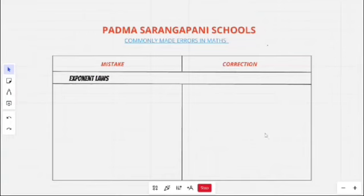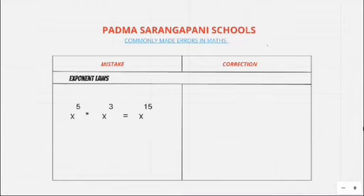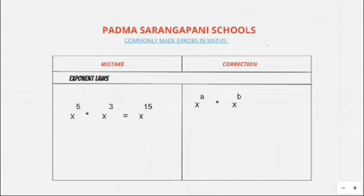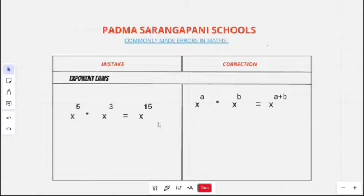The third common mistake is exponent loss. Take the expression x to the power 5 into x to the power 3. You will write x to the power 15 because you multiply the two powers — but that is wrong. According to the exponent rule, x^a into x^b equals x^(a+b). So x^5 into x^3 is equal to x^8.